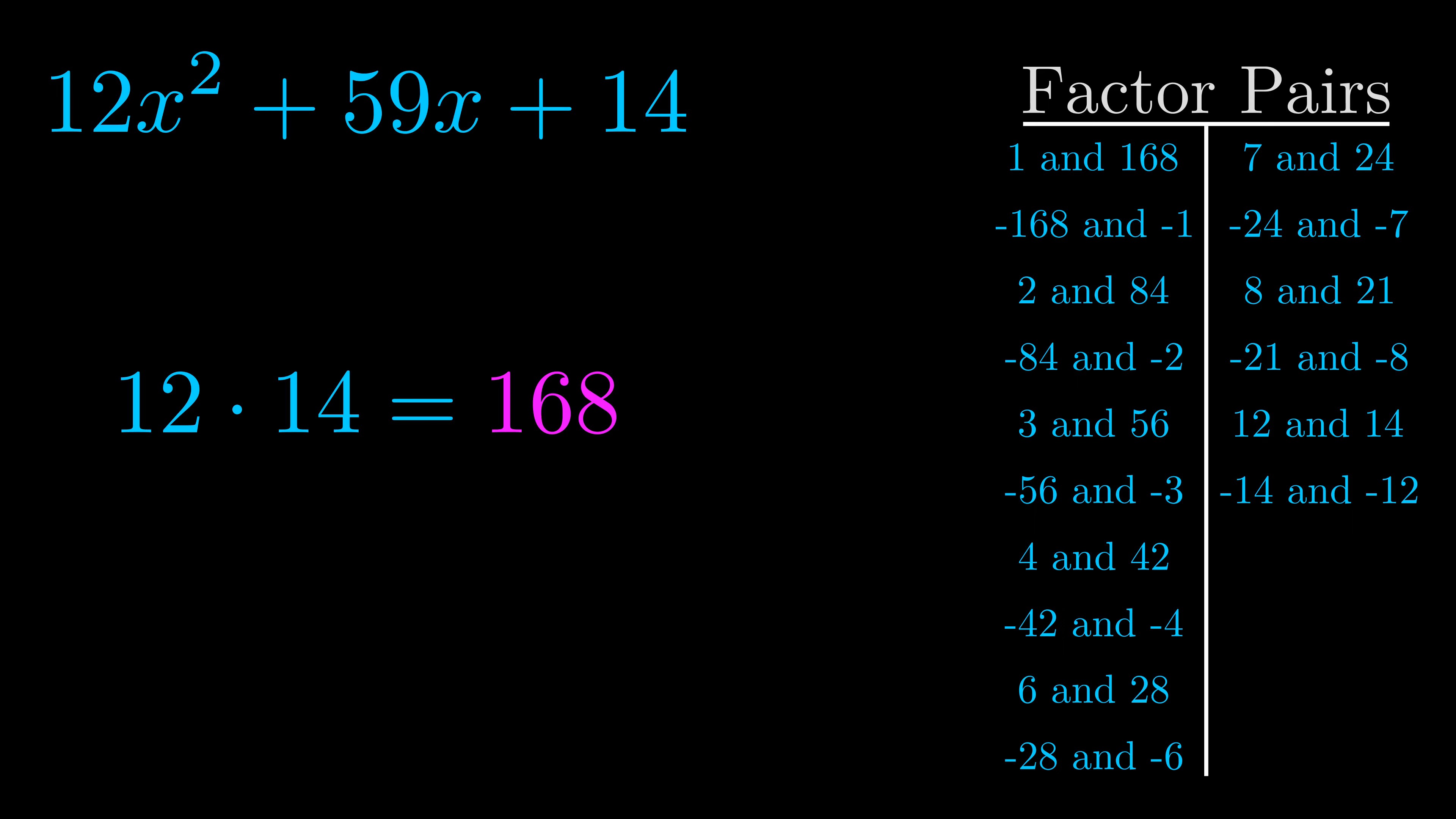The b value is the coefficient on the x term. That's the middle term, the one that we haven't done anything with yet. And really this is the only factor pair that we need.